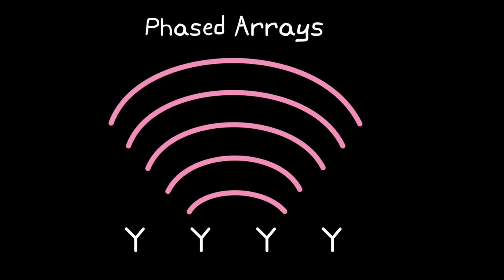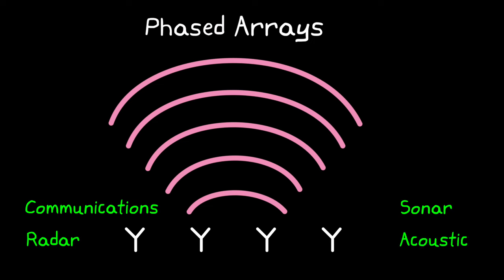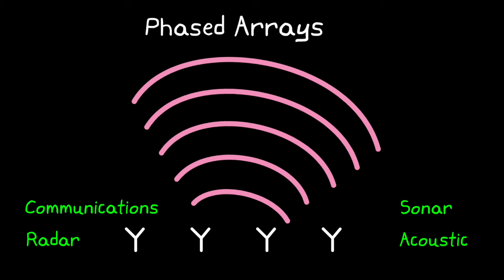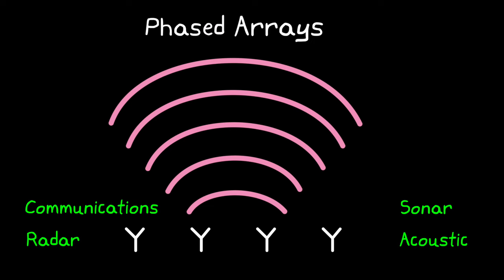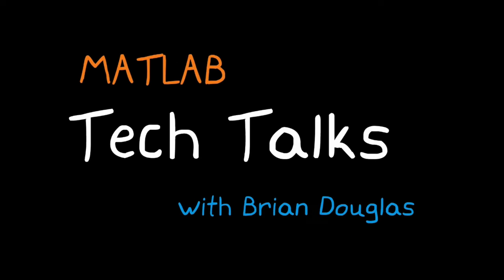Commonly an array is made up of antennas, like for wireless communications and for radar. But the general concept can be applied to different sensors as long as they measure or emit waves, such as microphones, which are used for sonar and acoustic imaging. In each of these applications we have to form a beam and we have to be able to move that beam around. And we can do that with phased array systems. I'm Brian and welcome to a MATLAB Tech Talk.